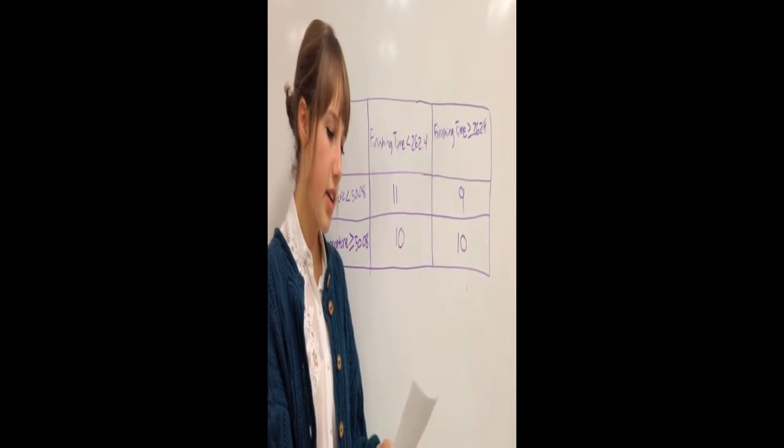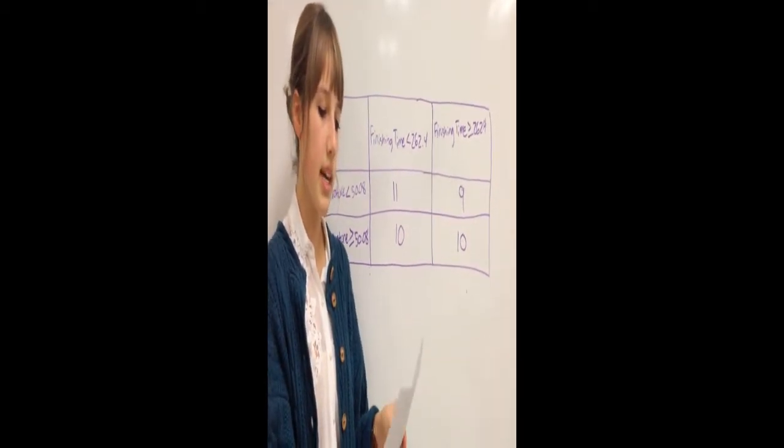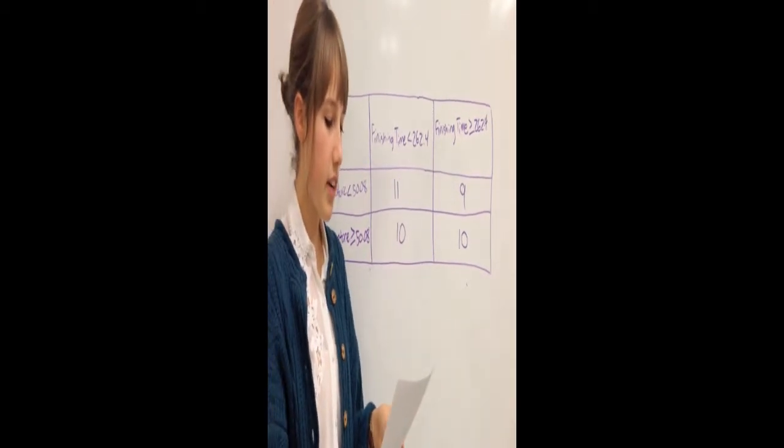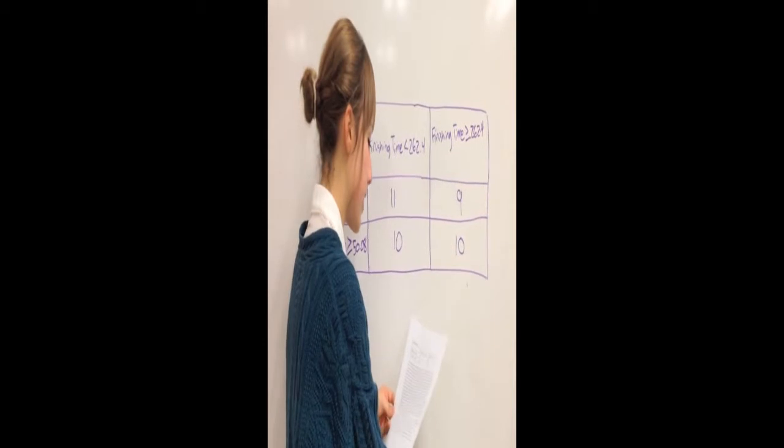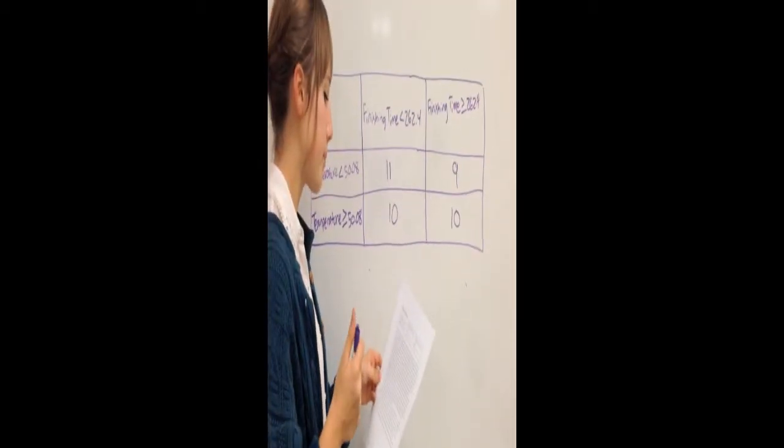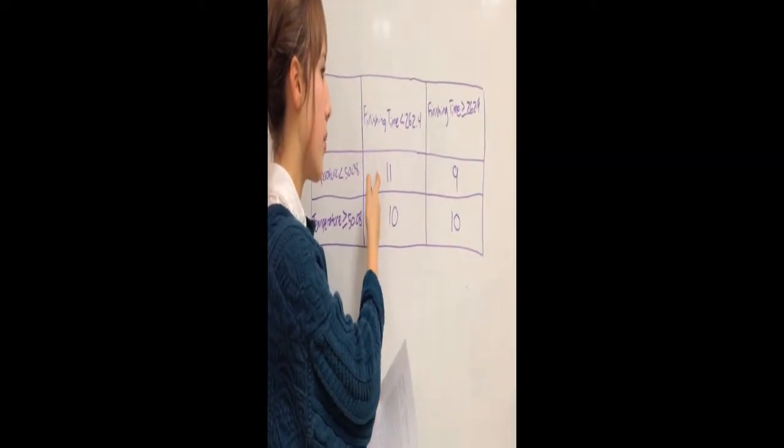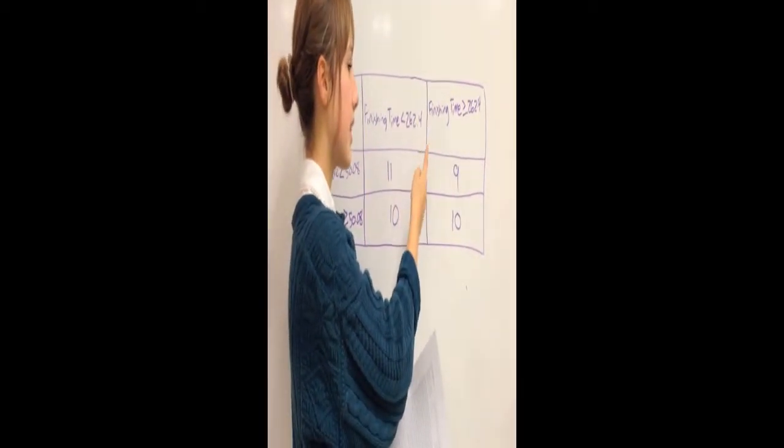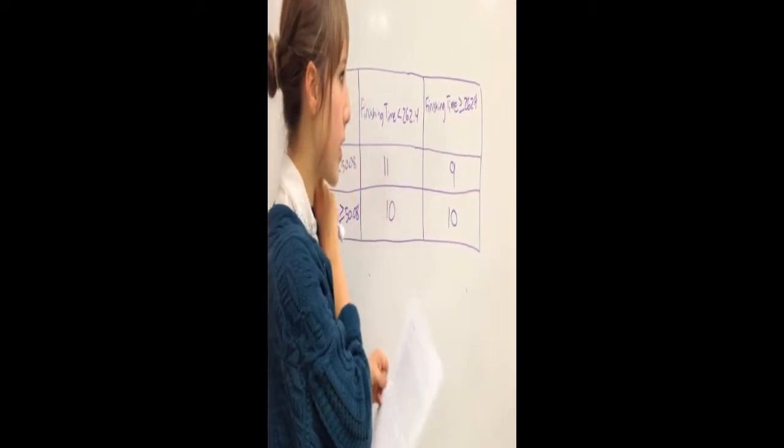It's important that each category has at least five data points in order for the equation to be accurate. The next step is to find the expected frequency. So first you need to find the probability of each variable to occur. For example, to find the probability of someone finishing in less than 262.4 minutes.